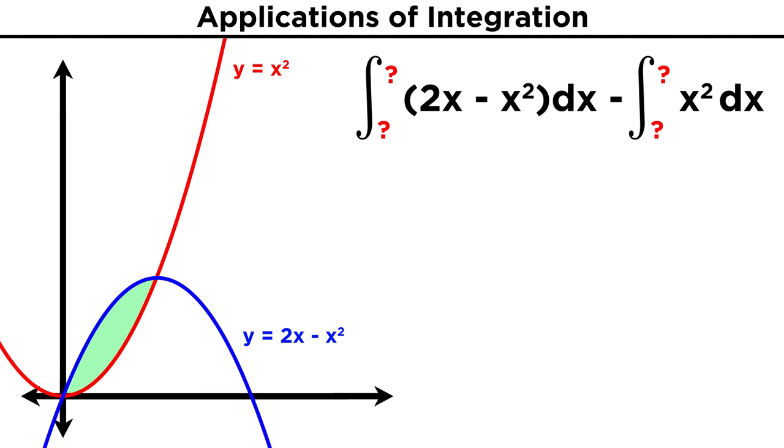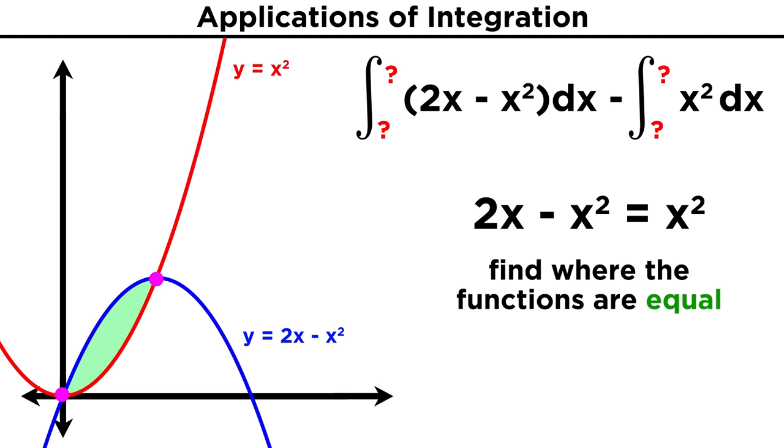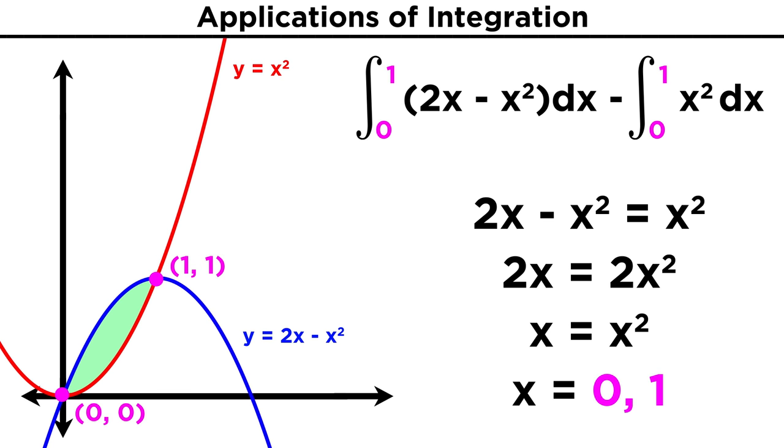So we have the two functions that we need to integrate, but what are the limits of integration? Well those will be the x values at the points where the functions intersect. So what are those values? We can probably tell from this graph, but just to make sure, let's set the functions equal to each other and solve, since these points must be solutions for both functions. A little bit of algebra will give us the origin, and one, one as the intersections, just as we might expect.